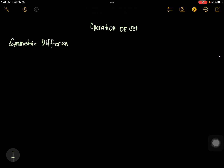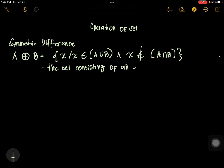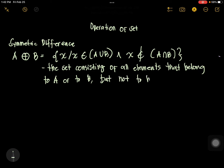The notation for symmetric difference is like a circle with a cross inside. It is defined as: X such that X is an element of A union B, and X is not an element of A intersection B. In other words, this is the set consisting of all elements that belong to A or to B, but not to both A and B.